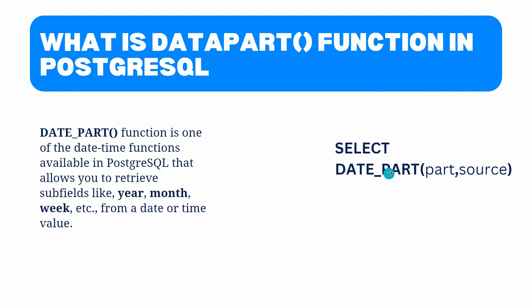Here you can see the syntax — after SELECT we specify the date_part function. Within the date_part function we provide two parameters: part and source. Part is the specific part of the date or time value that you want to extract — for example, year, month, hour, minute, second, or millisecond. Source is the date or time value from which you want to extract a specific part.